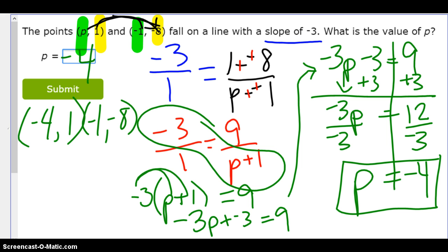So, 1 minus negative 8 over negative 4 minus negative 1. So I get 9 over negative 3. Does that simplify to negative 3? The answer is yes, it does. So, I got it.